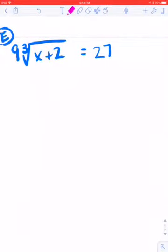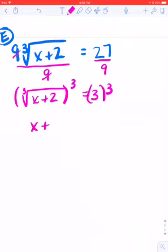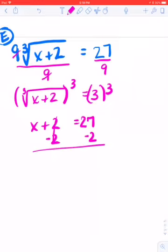Okay, now in order to get the radical by itself in this one, I'm going to have to divide by 9. Then those cancel. So the cube root of x plus 2 equals 3. And then I'm going to cube both sides. So x plus 2 equals 27. Subtract 2. x equals 25.